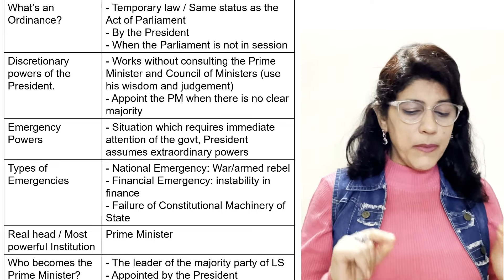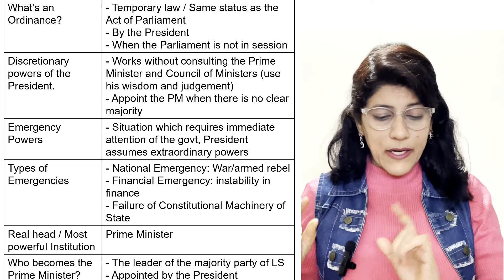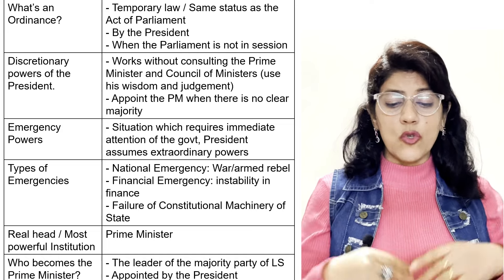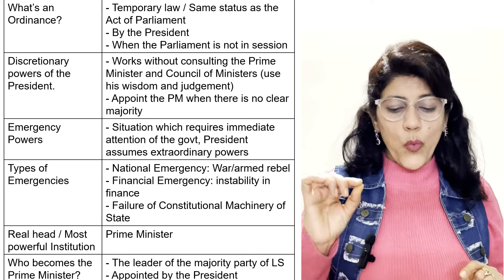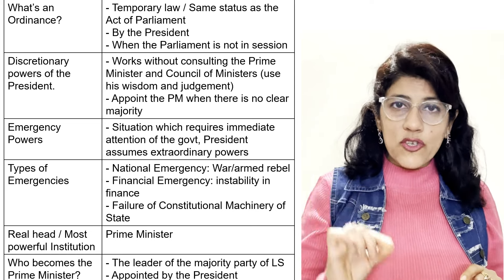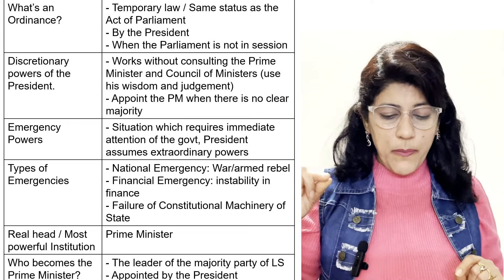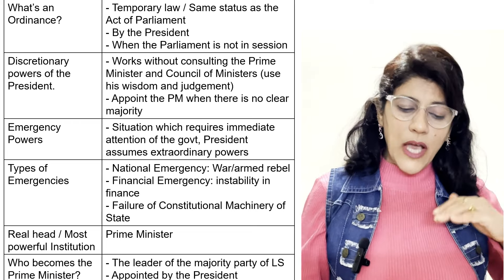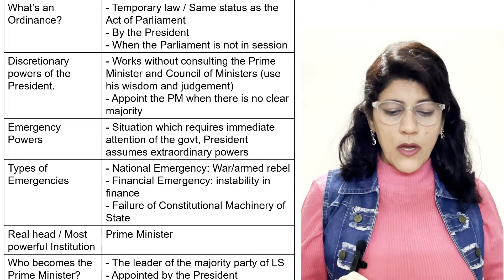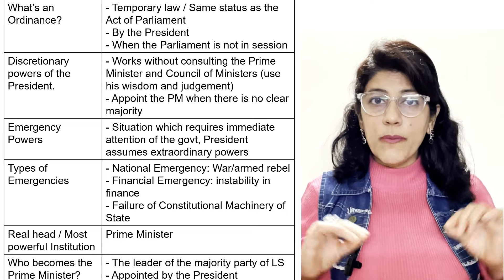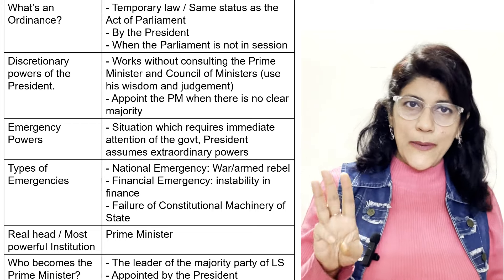Discretionary powers of the President: works by consulting the Prime Minister and Council of Ministers, uses his wisdom and judgment, and appoints the Prime Minister where there is no clear majority. Emergency powers — situations which require immediate attention of the government; at this time the President assumes extraordinary powers. Types of emergencies: National Emergency (war or armed rebellion), Financial Emergency (instability in finance), and State Emergency (failure of constitutional machinery of the state).